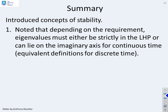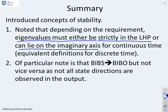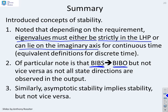In summary, we've introduced concepts of stability and noted that depending on the requirement, eigenvalues must either be strictly in the left half plane, or they can lie on the imaginary axis. Equivalent definitions apply for the discrete time system. Of particular note is that a bounded input, bounded state result implies a bounded input, bounded output result, but not vice versa — you could have a BIBO result and yet not a BIBS result. Similarly, asymptotic stability implies stability, but not vice versa: stability allows oscillatory modes, but asymptotic stability does not.